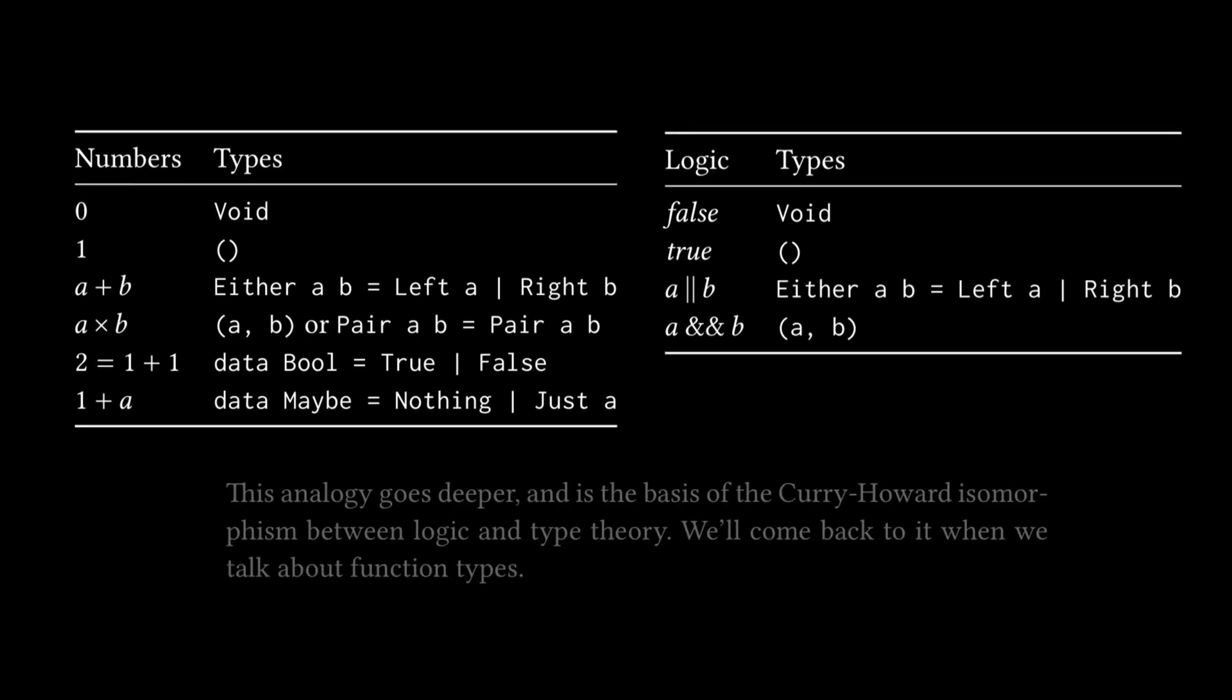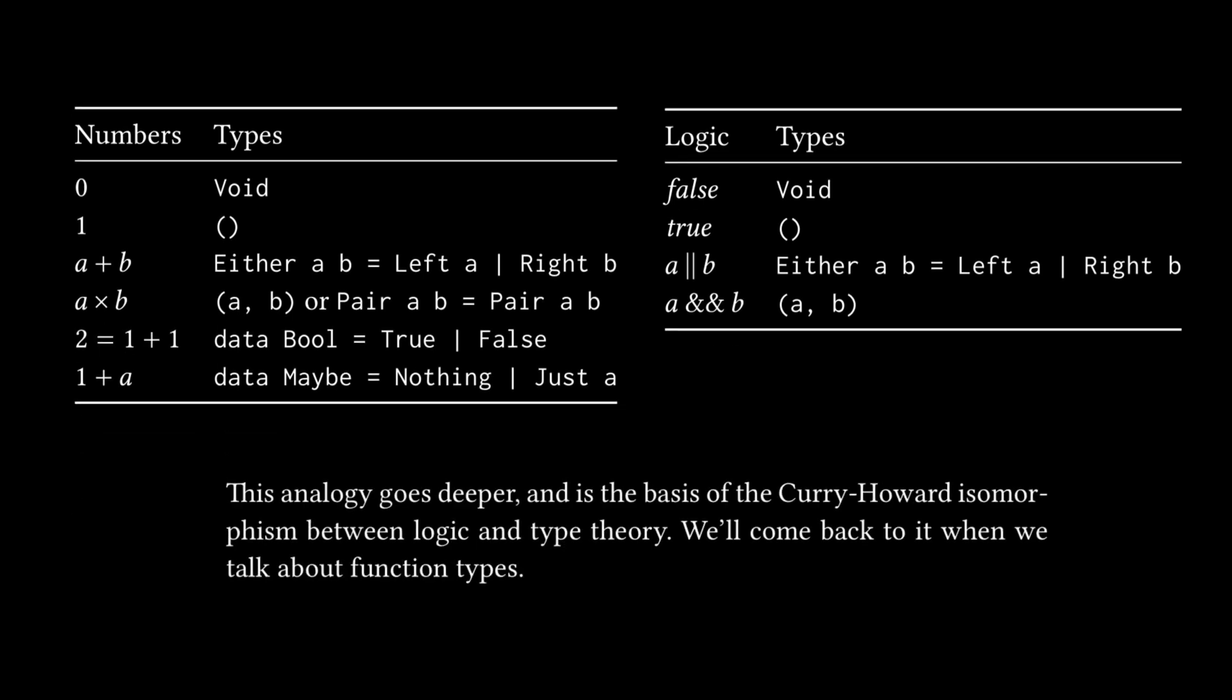And similar comparisons are made in the natural numbers to types. But on top of this, the textbook or Bartosz states, this analogy goes deeper and is the basis of the Curry-Howard isomorphism. This is specifically after the logic and types table between logic and type theory. We'll come back to it when we talk about function types. So super interested to revisit this. I have definitely heard about the Curry-Howard isomorphism more times than I can count on podcasts, sometimes as jokes, sometimes because people are actually delving into the topic. But yeah, definitely looking forward to revisiting this in a future chapter.